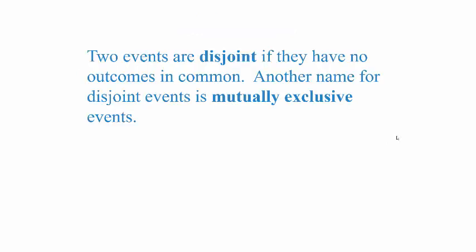First off, what are disjoint events? Two events are disjoint if they have no outcomes in common. Another name for disjoint events is mutually exclusive, meaning they can't happen at the same time. For example, if you flip a coin, one event is getting heads and another is getting tails. Obviously they're disjoint because you can't get both heads and tails at the same time.